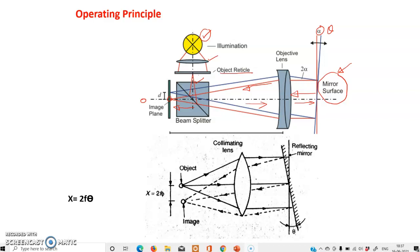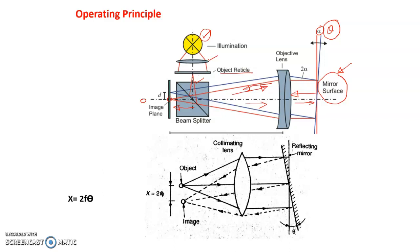In the second part, if we provide an angular tilt of theta to the mirror surface, the beam will move in the same direction as in the first case, but after hitting the mirror surface it will be reflected back at an angle of 2 theta to the first beam. It will pass back through the collimating lens and through the beam splitter, and it will be incident on the image plane at a different point known as O dash. The distance between O and O dash is denoted by x. If we can measure this distance x, we can relate x with respect to the deflection theta and the focal length of the collimating lens.